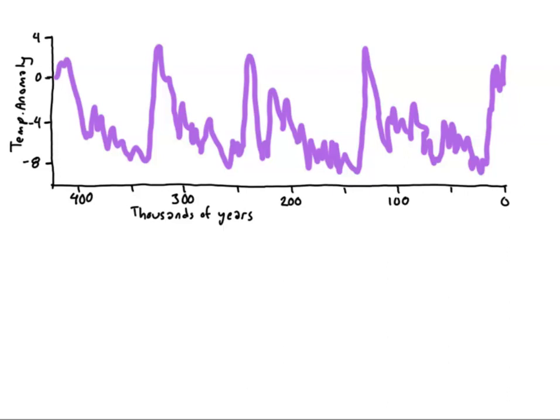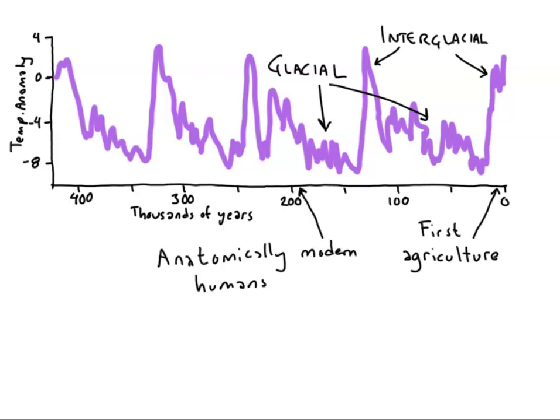The cool periods are known as glacials, when massive ice sheets covered large portions of the higher latitudes. The warm periods are known as interglacials. Our species, Homo sapiens, has been around for about 200,000 years, meaning we have lived through two major glacial cycles. The most recent one reached its peak, called the Last Glacial Maximum, about 18,000 years ago. The earliest agriculture and cities began in southwest Asia around 10,000 years ago, at the start of the current interglacial period. Practically all of the history you know has occurred during this relatively stable climate period.